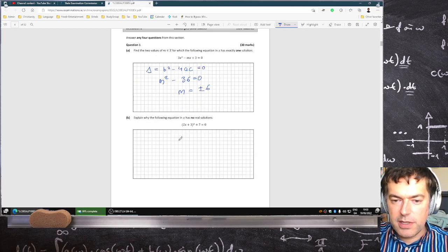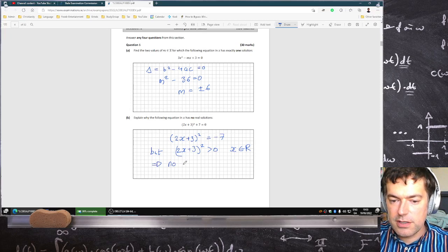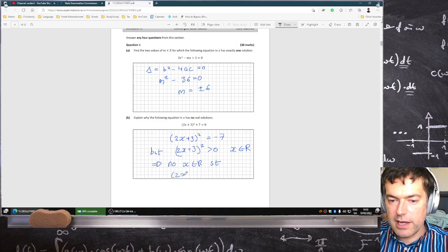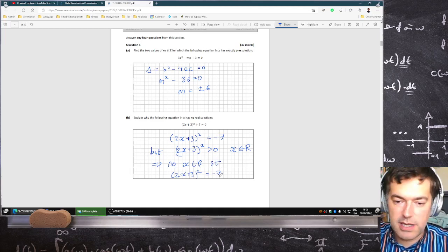Explain why the following equation in x has no real solution. Because 2x plus 3 squared equals minus 7. But 2x plus 3 squared must be greater than zero if x is a real number. So that means there is no x in R such that we can have 2x plus 3 squared equal to minus 7. So you have a positive equal to negative. The equation doesn't make any sense.